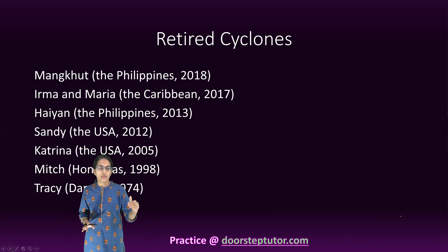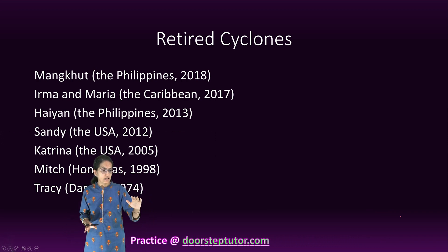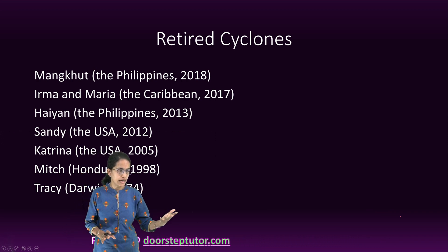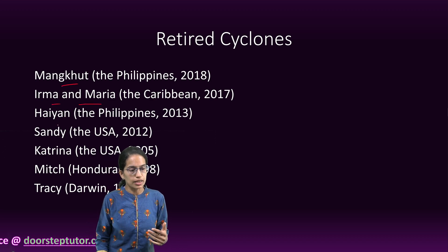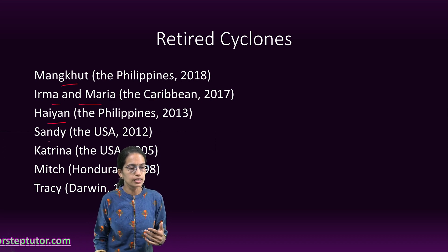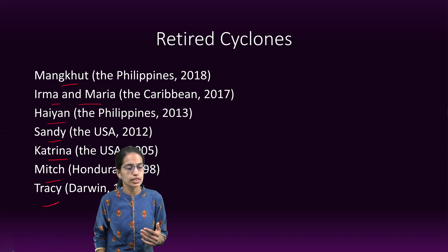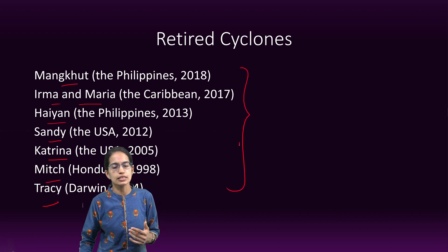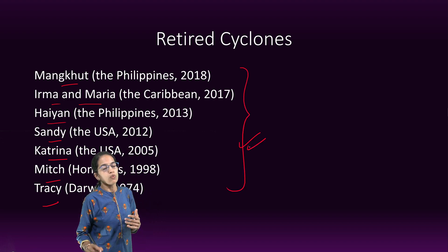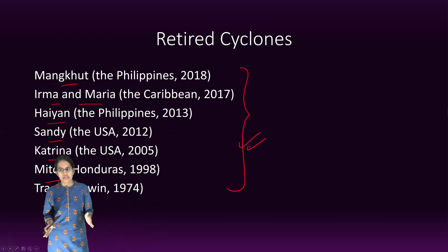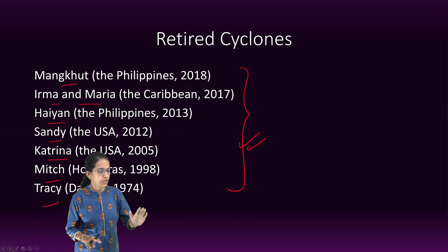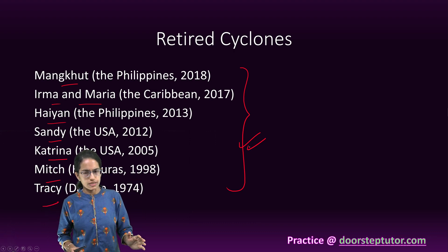Some of the cyclone names that have been retired are Manghut, Irma, Maria, Hayan, Sandy, Katharina, Mitch, and Tracy — because these were considered severely devastating, and therefore their names have been withdrawn from the list.